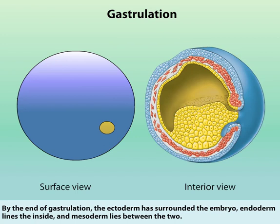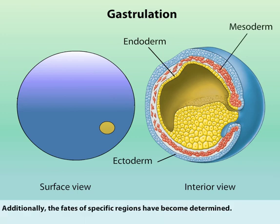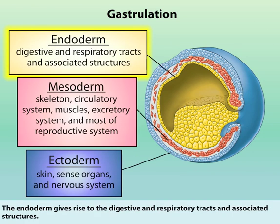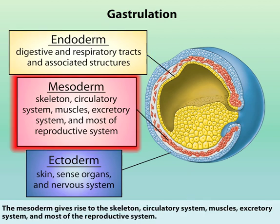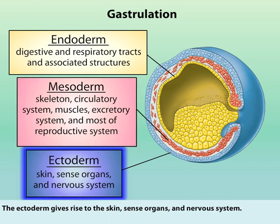By the end of gastrulation, the ectoderm has surrounded the embryo. Endoderm lines the inside and mesoderm lies between the two. Additionally, the fates of specific regions have become determined. The endoderm gives rise to the digestive and respiratory tracts and associated structures. The mesoderm gives rise to the skeleton, circulatory system, muscles, excretory system, and most of the reproductive system. The ectoderm gives rise to the skin, sense organs, and nervous system.